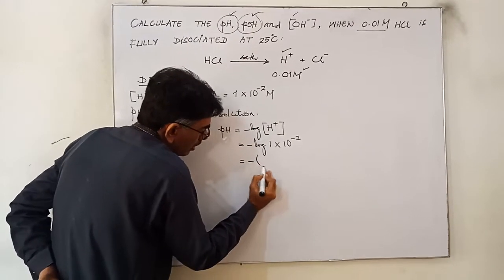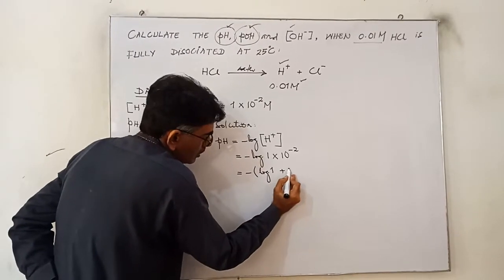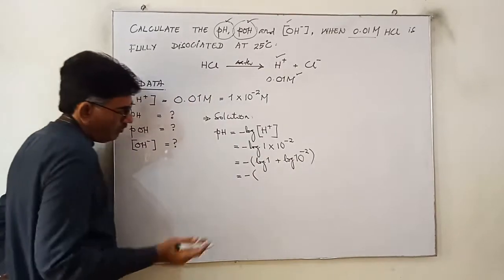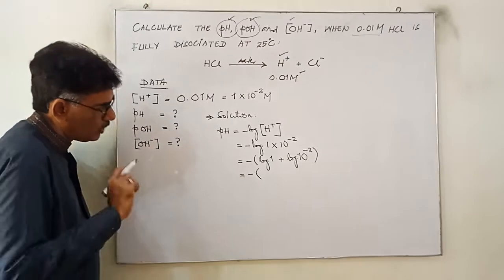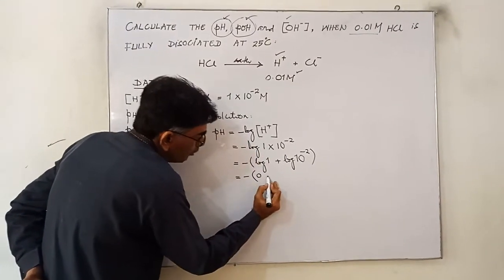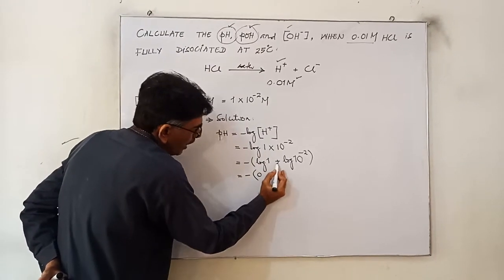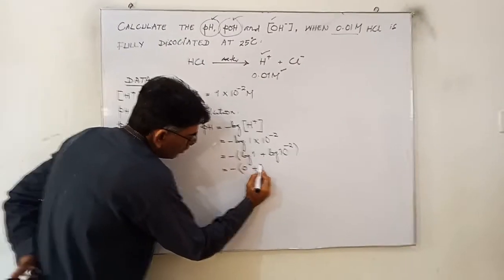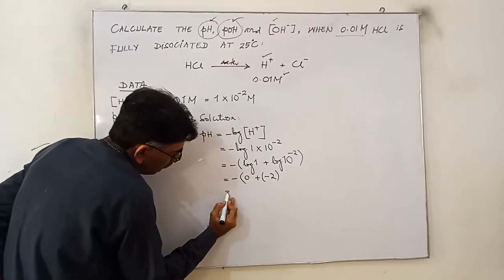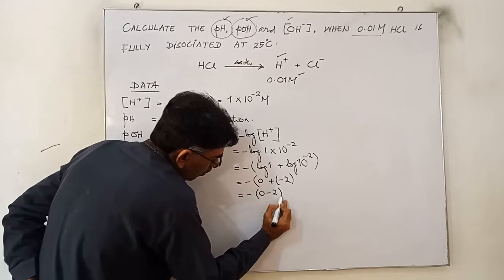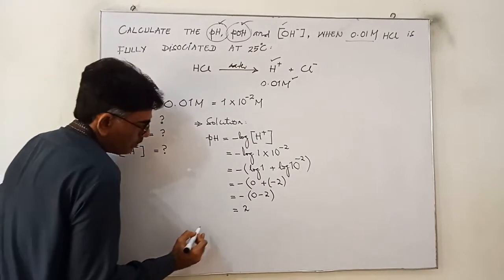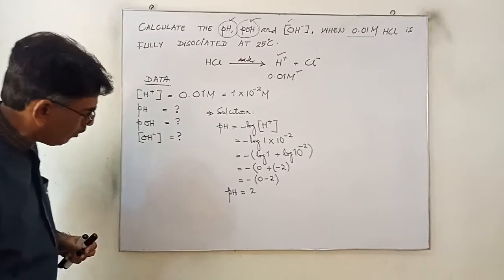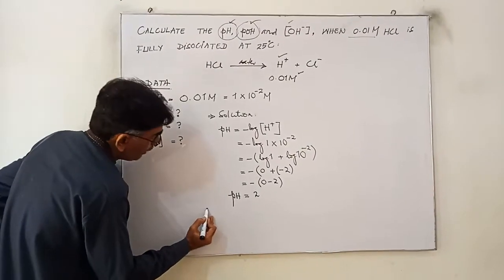We have: pH = -(log 1 + log 10⁻²). From the log table, log of 1 is 0, and log of 10 is 1, multiplied by -2 gives -2. So pH = 0 - (-2) = 2. The pH of the given concentration of 0.01 molar, which is 1 × 10⁻², is 2.